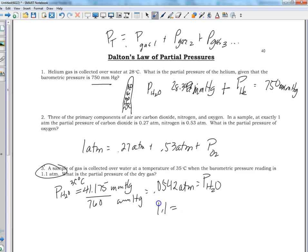If the total is 1.1 and the water pressure is this, our remaining amount will be our gas.